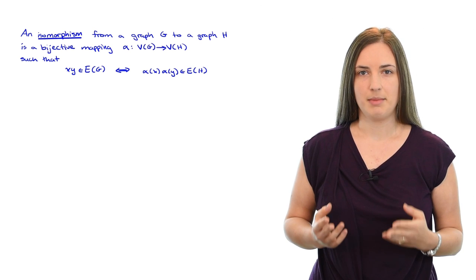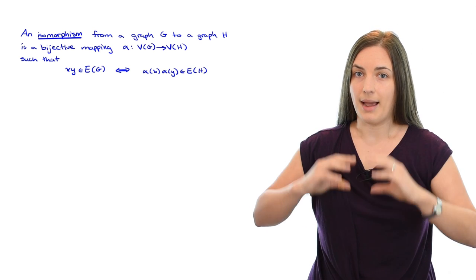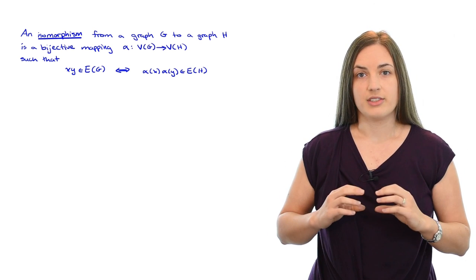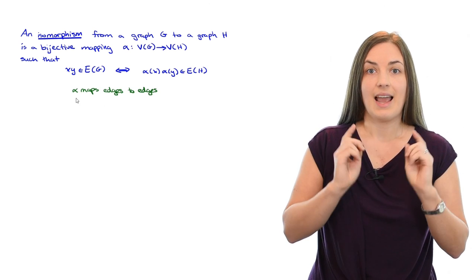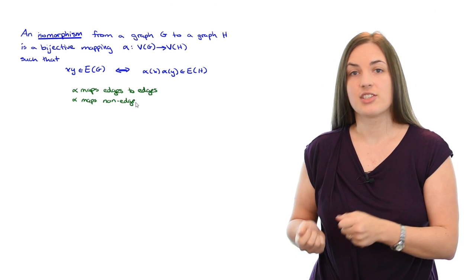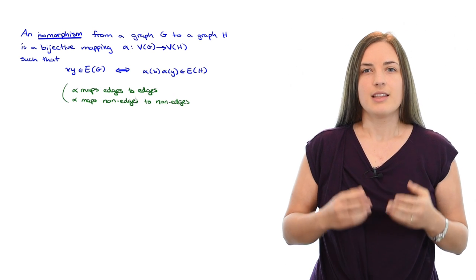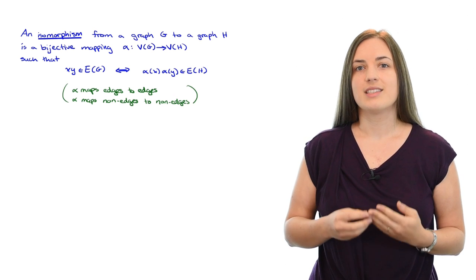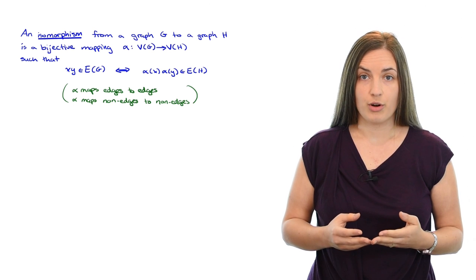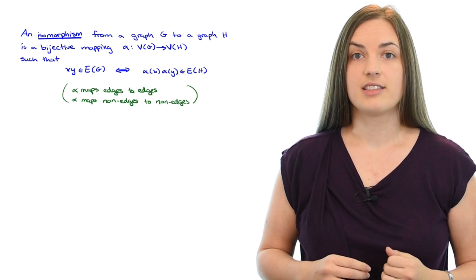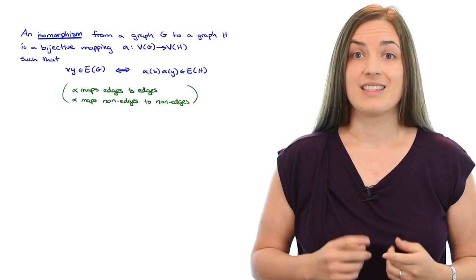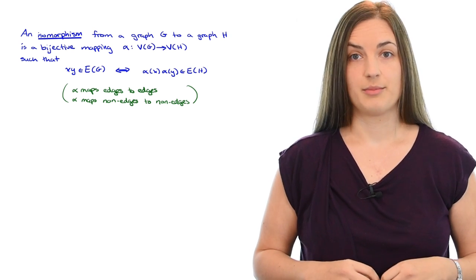If we think about what this means, this means that the mapping on the vertices forces the edges to map to edges and forces the non-edges to map to non-edges. This is exactly what we mean when we say that an isomorphism preserves adjacency and non-adjacency. Check the links in the description below for more examples about graph isomorphisms.